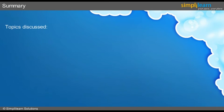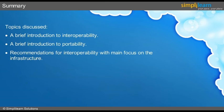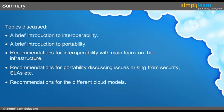Now that we have come to the end of this domain, let's have a short recap. We discussed briefly about interoperability and portability. We looked into recommendations for interoperability, which looks at the infrastructure aspects. We also looked into the recommendations for portability, with respect to the issues pertaining to security, SLAs, etc. Lastly, we discussed in detail about the recommendations for the different types of cloud models. Following slides are dedicated to the quiz section, which will help you understand this domain better. In the next domain, we will be learning about traditional security, business continuity and disaster recovery.